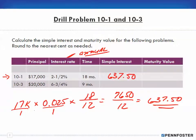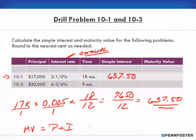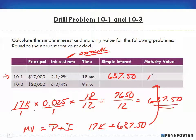Now for the maturity value: the maturity value equals the principal plus the interest. So I have $17,000 plus $637.50 in interest, which gives me $17,637.50 as my maturity value.